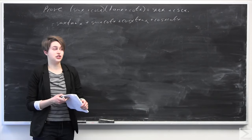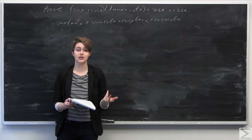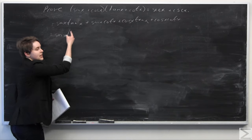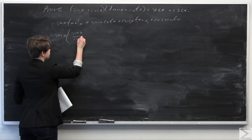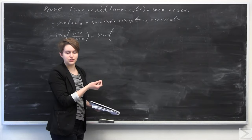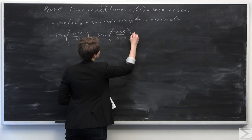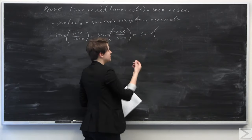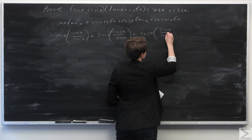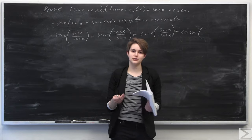Now I'm going to expand out tangent of x and cotangent of x using their definitions. Tangent of x is equal to sine of x over cosine of x, and cotangent of x is equal to cosine of x over sine of x. So we substitute those definitions in for each term respectively.